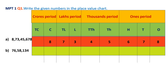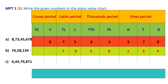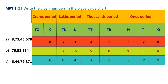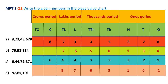The second question is 76,58,134. Again, starting from the right hand side move towards the left and place each digit in its place. Remember: ones period is three places and all other periods are two places. So start from the right and move left for all such questions.